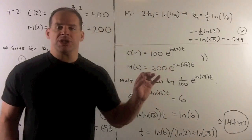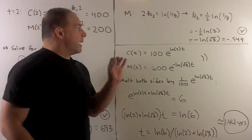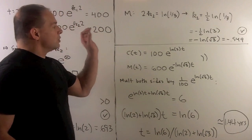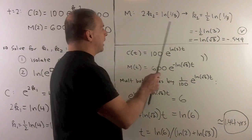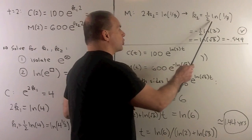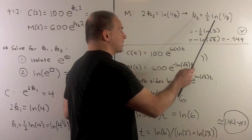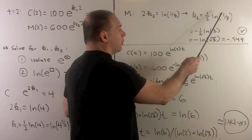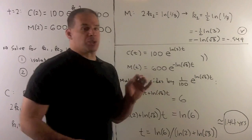Now, we apply the same procedure for the mouse population. I won't do the details. We just wind up getting k₂ equal to a half natural log of one-third. The half can go to the inside. But before I do that, I know that one-third is 3 to the minus 1.